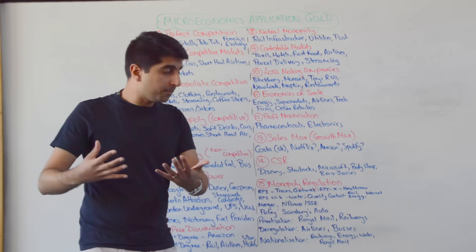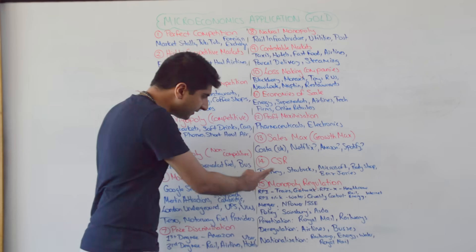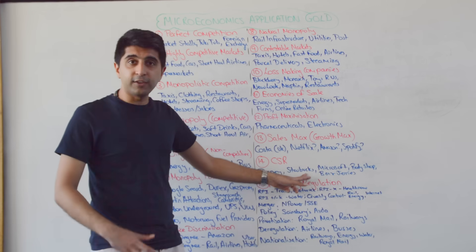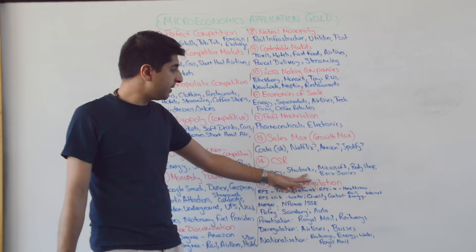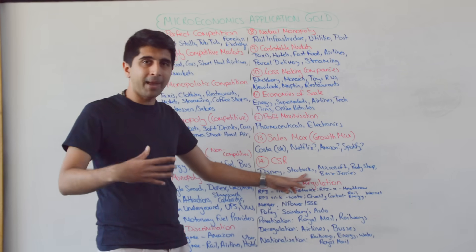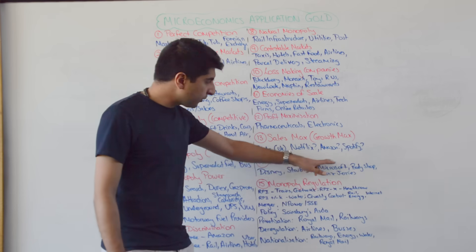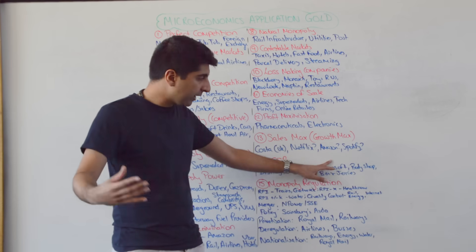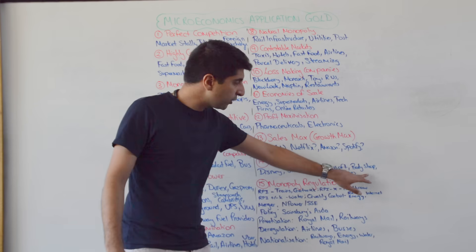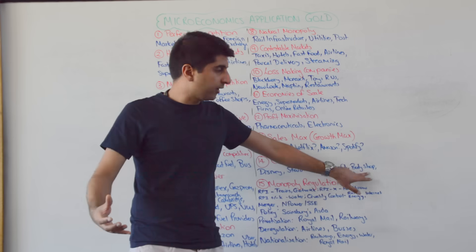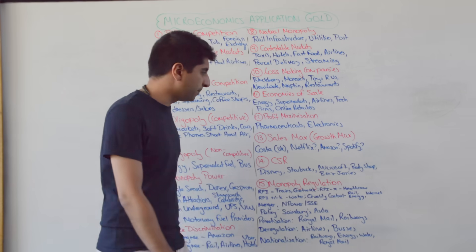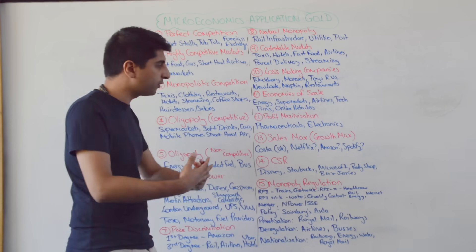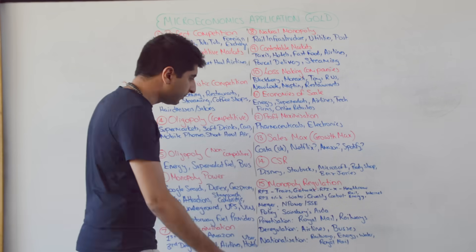Corporate social responsibility: Disney, Starbucks — the way they source their coffee beans and pay their suppliers. Microsoft with their charitable activities and the Bill Gates Foundation. Body Shop — how they test their products not on animals. Ben & Jerry's — the way they source their ingredients as well.